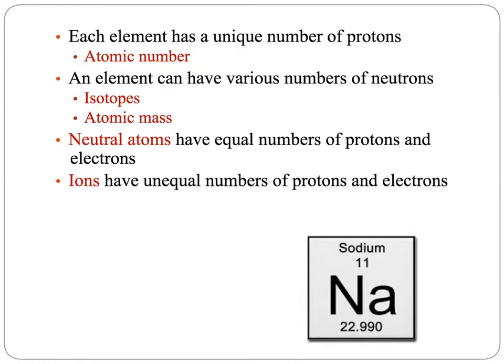Remember that each element has a unique number of protons. And it is the protons that we are counting in the atomic number, the smaller number that is found on the blocks on the periodic table. Also remember that an element can have various numbers of neutrons in it, and those create the different isotopes for any one element.